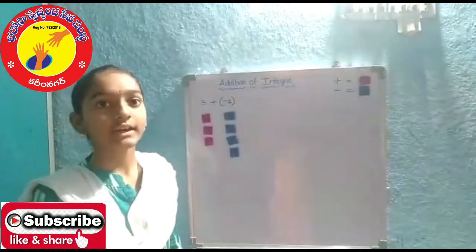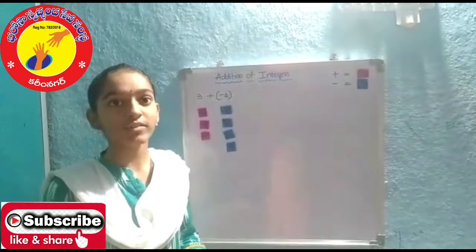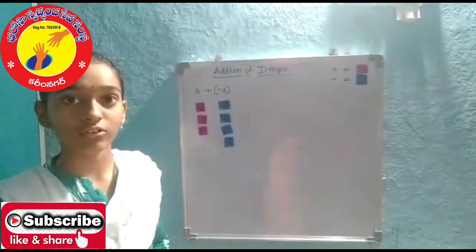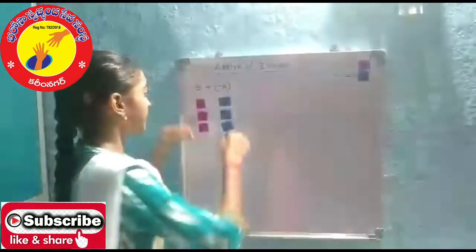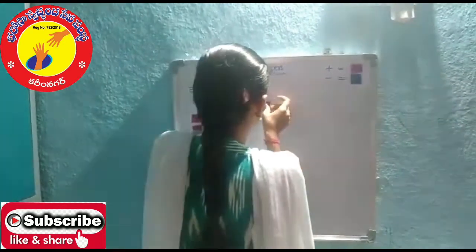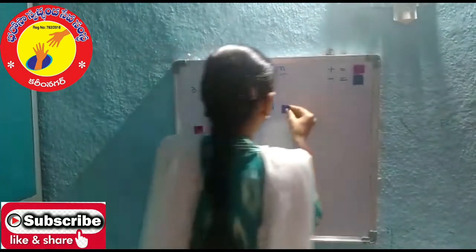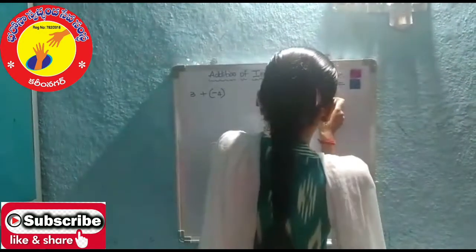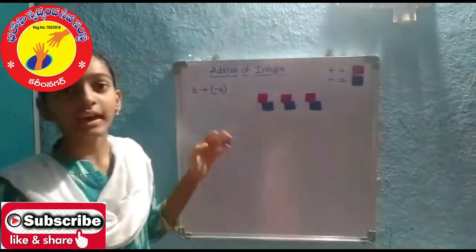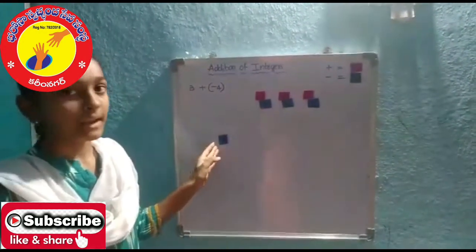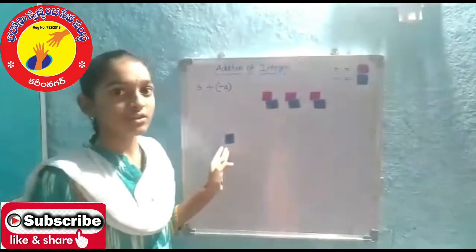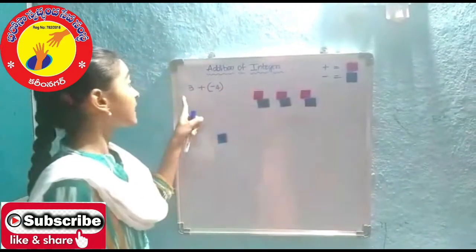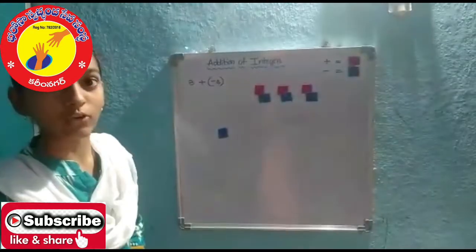We know that 1 positive and 1 negative integer become 0, so we have to take out zeros. Here negative 1 is left with us, so 3 plus negative 4 equals negative 1.